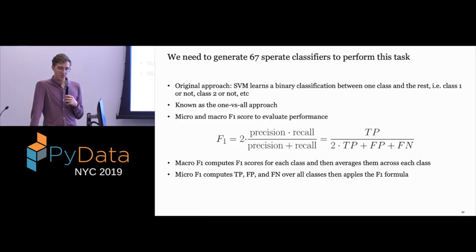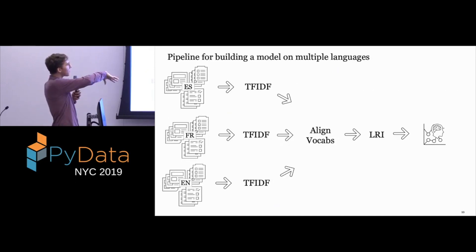The formula for everyone that forgot it. Basically macro F1 computes F1 scores for each class and then averages them. And then micro F1 computes true and false positives and false negatives for each class and then applies the F1 formula. Macro F1 is going to be treating all classes as if they had the same frequency and micro F1 will be weighting classes based off of their frequencies. So this is basically our pipeline. We start with all of these corpora from different languages, get their TF-IDF encodings, align their vocabularies. We don't need to actually align their datasets. You just need to align their vocabularies to get the common terms across them and then build your lightweight random indexing index vectors, apply that algorithm that we saw, and then build a model on top of the new dataset.